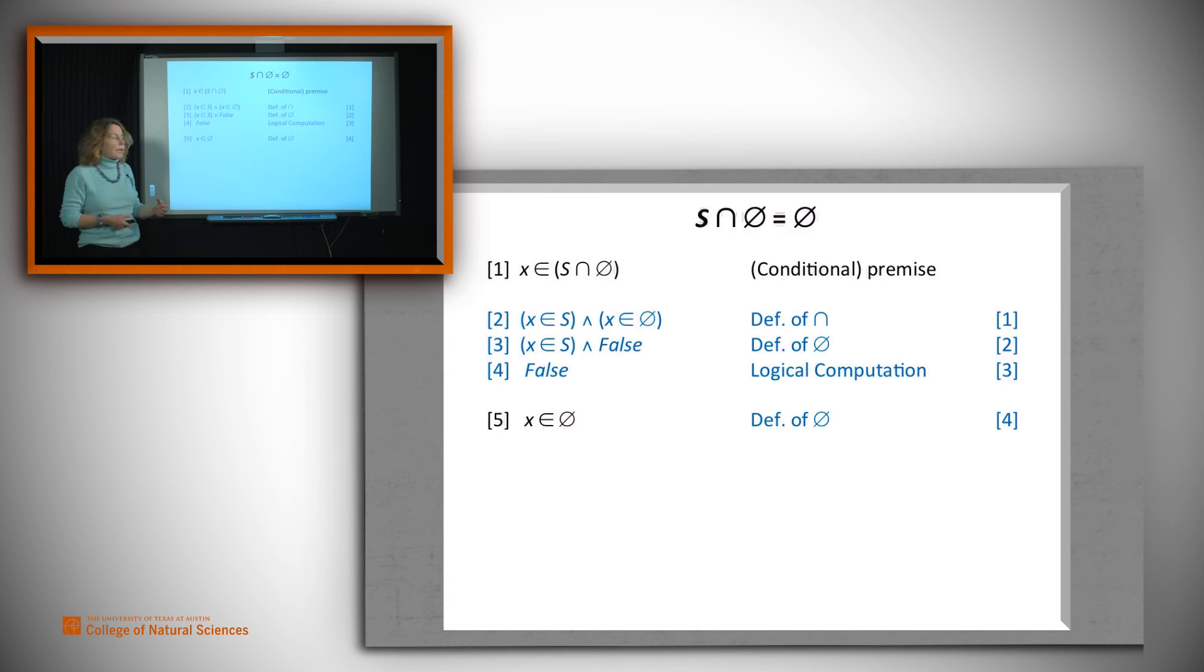And now we know how to go from four to five. It's that we use the definition of the empty set. So we've now filled in the guts of our proof. We add the rest of it and we're done,